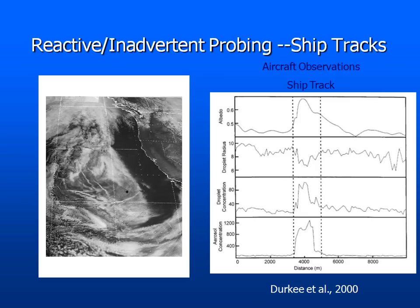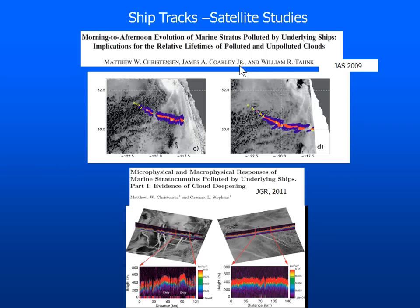I call these reactive inadvertent probing because it's hard when you're out there — you get your airplane ready, fly out, and you have to find a ship track that may or may not be there. But in the MASF — the Monterey Area Ship Track experiment in 1994 — they were able to make several aircraft penetrations and characterize the aerosols. We can see that the cloud droplet concentration goes dramatically higher in the ship track itself, as does aerosol concentration, while droplet radius goes down and albedo goes up — consistent with the Twomey-type approach.